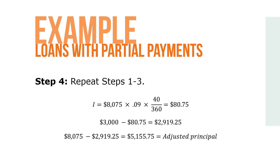So $3,000 minus $80.75 equals $2,919.25. Finally, $8,075 minus $2,919.25 equals $5,155.75 in adjusted principal.